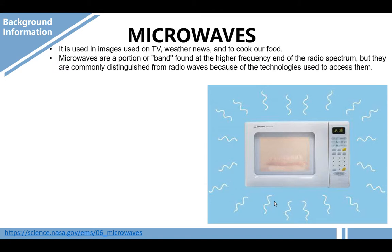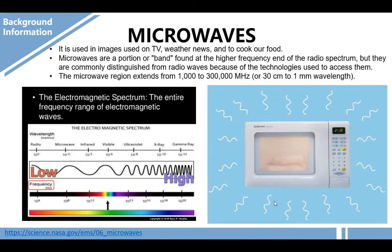Microwaves are used in images on TV, weather, news, and to cook our food. Microwaves are a portion or band found at the higher frequency end of the radio spectrum, but they are commonly distinguished from radio waves because of the technologies used to access them. The microwave region extends from 1,000 to 300,000 megahertz, or 30 centimeters to 1 millimeter wavelength.